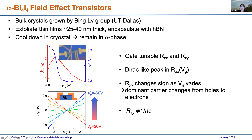We then do transport measurements. Here is a picture of the device we make — the long section is along the b-direction. We can get flakes large enough to place a Hall bar geometry on them, so we can measure both longitudinal resistance R_xx and transverse resistance.